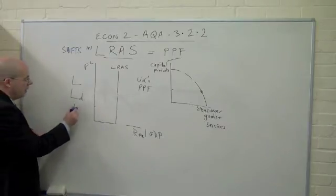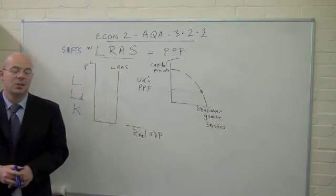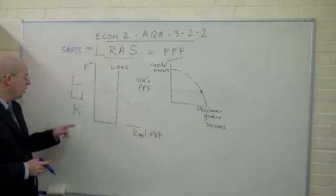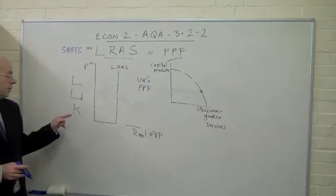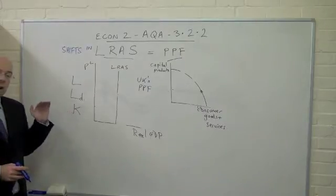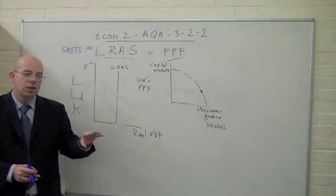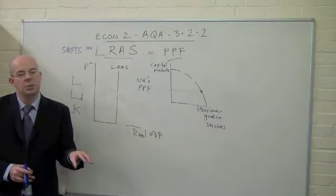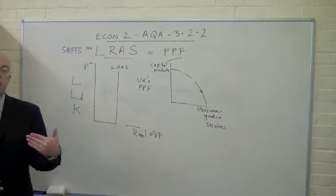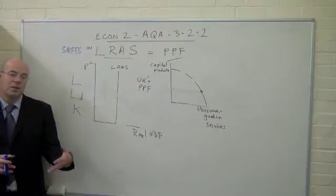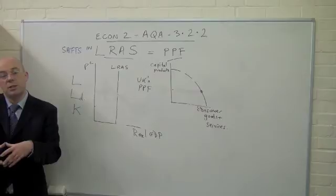We're going to be looking at capital — K is shorthand for capital, Das Kapital rather than C being consumption. How can we improve the quantity and quality of capital? There could be issues such as low interest rates, keeping inflation low so that long-term interest rates remain low. A private sector business will think: if I borrow money to invest in creating new machinery, new factories, new retail outlets — if I do that long-term investment project, I'll be paying back a loan at a low rate of interest for the next few years.